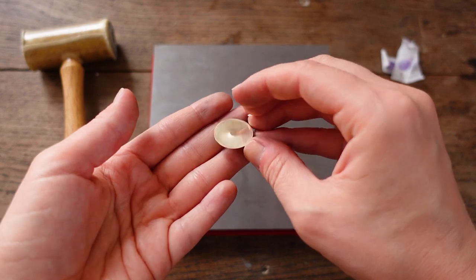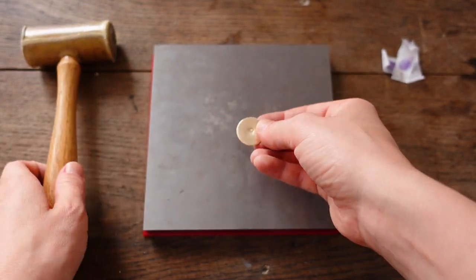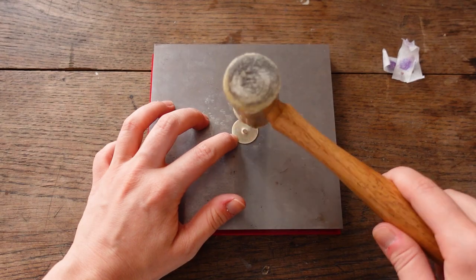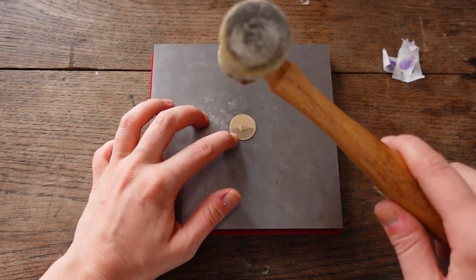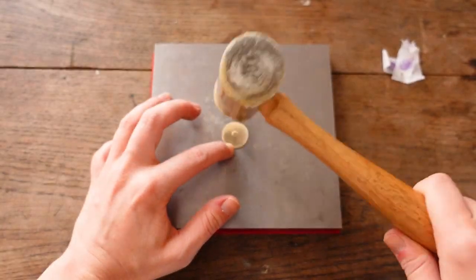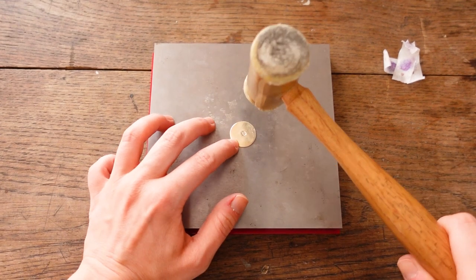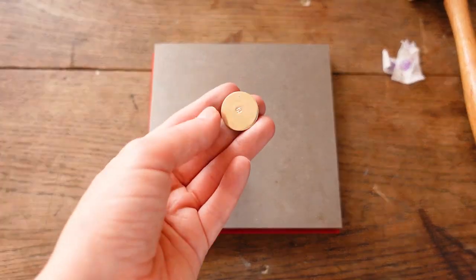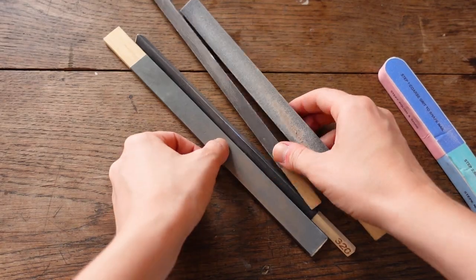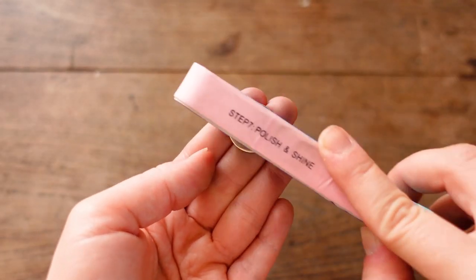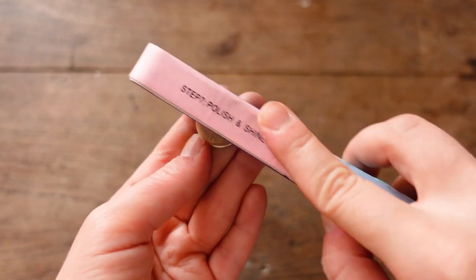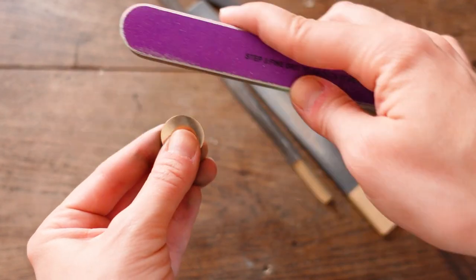Due to stamping the disc might bend a little so use a rawhide mallet to flatten it. Then use dry and wet papers, buffing sticks or nail buffing accessories to clean and polish the surface.